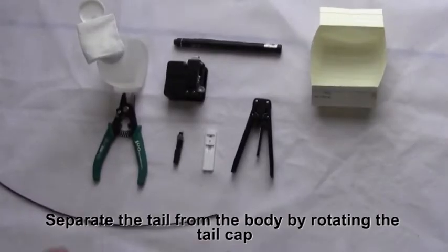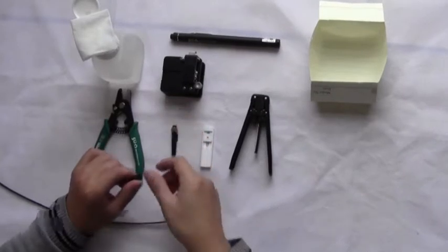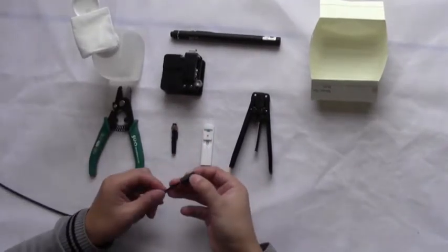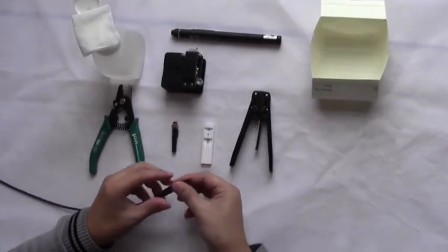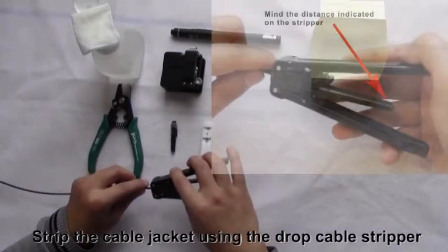Separate the tail from the body by rotating the tail cap. Strip the cable jacket using the drop cable stripper.